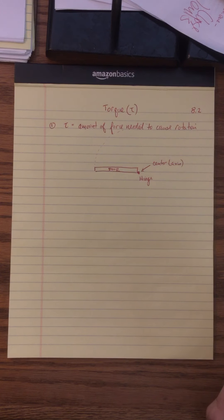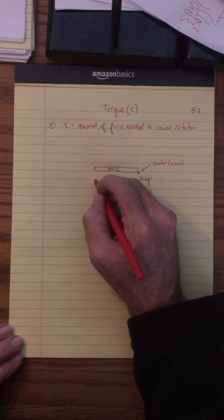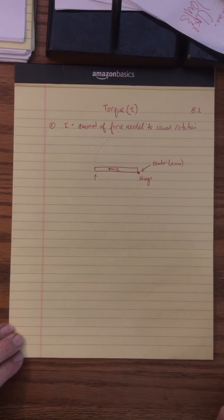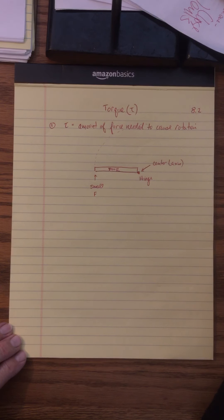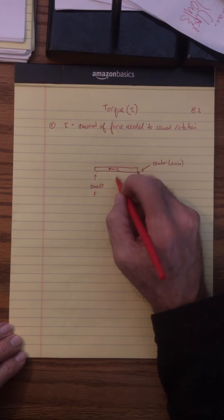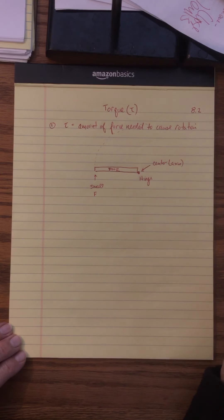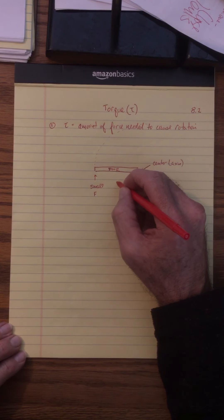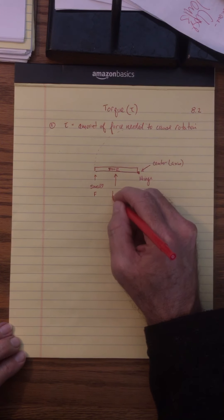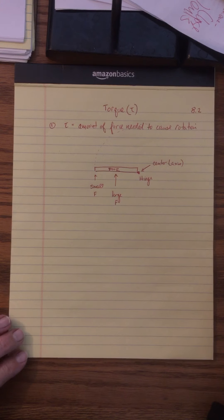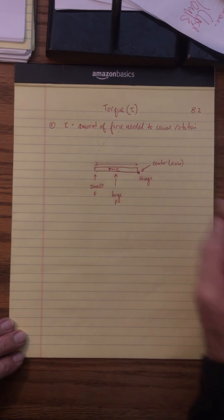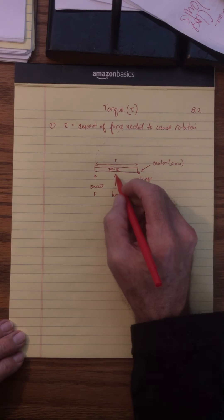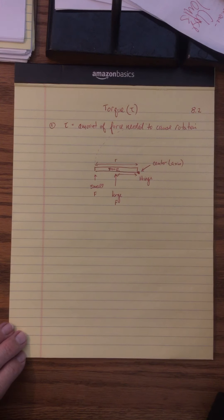Eli went to the door and was pushing on the end with his pinky. It required a small force to cause the rotation. Now if he applied the same force closer to the hinge, the door would not rotate — he had to apply a larger force. We're measuring the distance as radius: a larger radius from hinge to end, and a smaller radius closer in. The smaller your radius, the larger the force you have to apply.